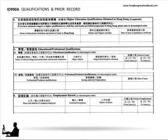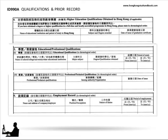There are four discrete sections on the form ID 990A which speak to your qualifications and prior employment record. It's vital that the information you provide in these sections of the form dovetail perfectly into the information detailed on the CV, which we recommend you include as standard in your application, so check the details carefully.